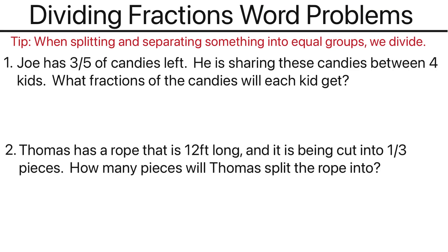In this example, what's being shared are the three-fifths of the candy, so this will be three-fifths. And how many equal groups are we dividing them into? As we can see from the example, there are four kids, so we're dividing between four kids — we'll divide by four. So that would be the setup for this question.